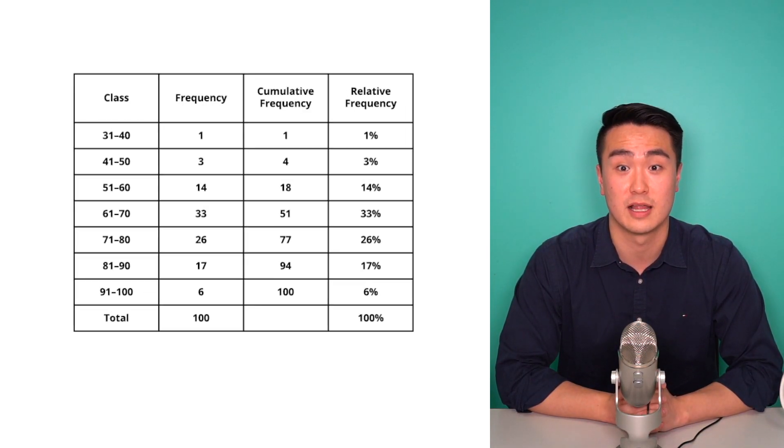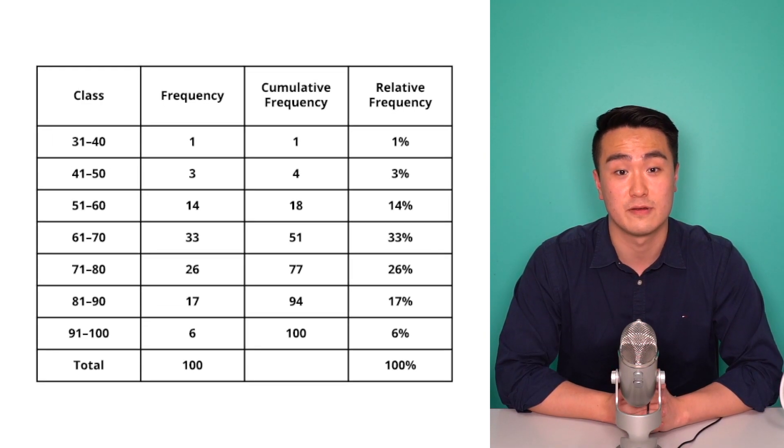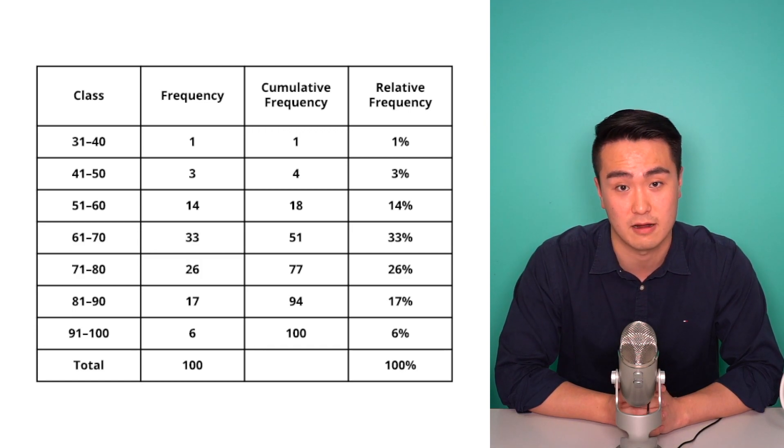Once we have all the data summarized into a good looking frequency table like this, we can now construct a frequency histogram and polygon which are essentially bar and line charts but using numerical data rather than categorical. So unlike bar and line charts, histograms and polygons are labeled and drawn slightly differently. So let's go through some of the differences.